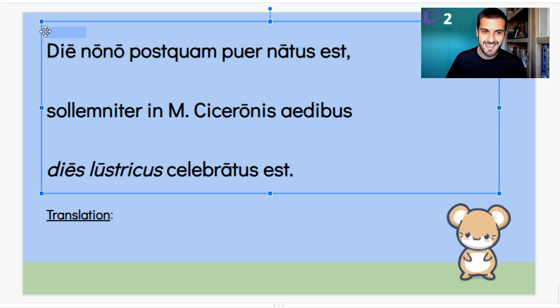All right, so we pick up here at Die nono. Die nono, that's in the ablative case. Anytime we have ablative words like day, week, month, year in the ablative, that kind of feels like ablative of time when. So the Die nono would be the ninth day. So we're talking about the ninth day, postquam, which I think is technically a conjunction. Postquam puer in the nominative, and then we have our verb here, natus est, third singular perfect. It is actually active. Yeah, it's active because the verb means to be born. It's a deponent verb.